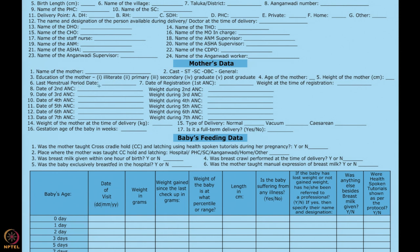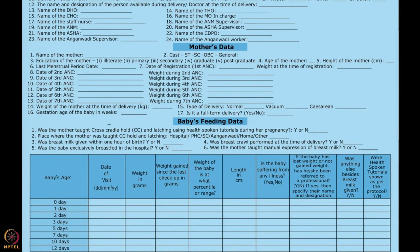Last menstrual period and date of registration. Date of second ANC, date of third ANC — we have all the ANC visits listed. You want to just write the date. You also want to write the weight to understand whether there is good weight gain. Weight of the mother at the time of delivery will tell us the weight difference between her first registration and delivery.